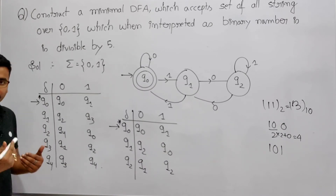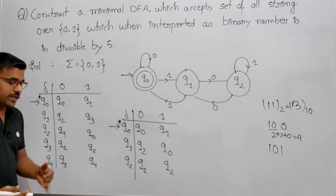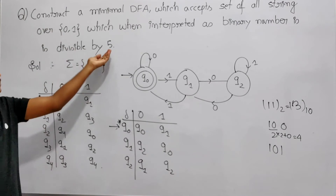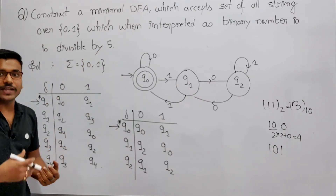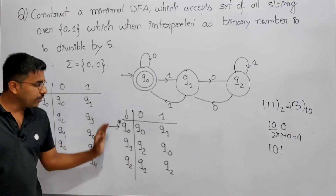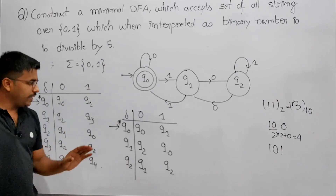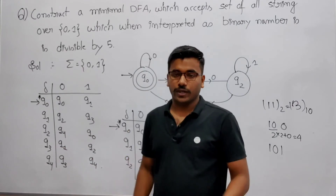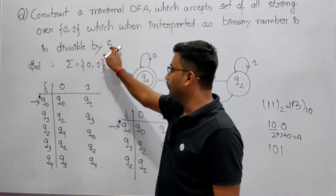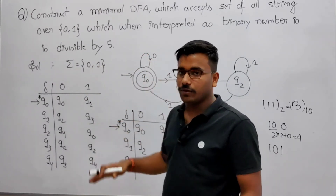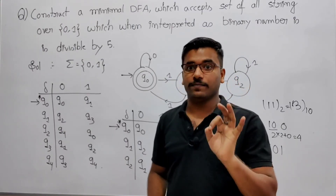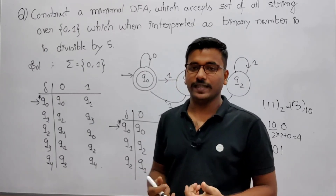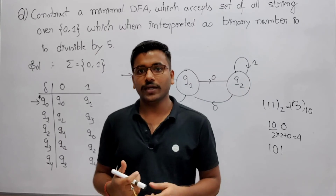If done correctly, Q0 will appear at the beginning and the highest-remainder state at the last. This shortcut applies to odd divisors. For even numbers like 4, this shortcut will give you a DFA but not a minimal one for binary numbers. For odd divisors, this shortcut always gives a minimal DFA. For binary numbers with even divisors, there are other shortcut methods which I will show you.